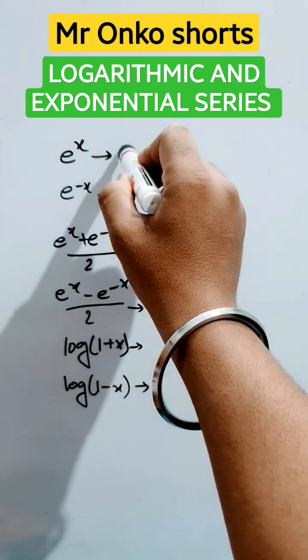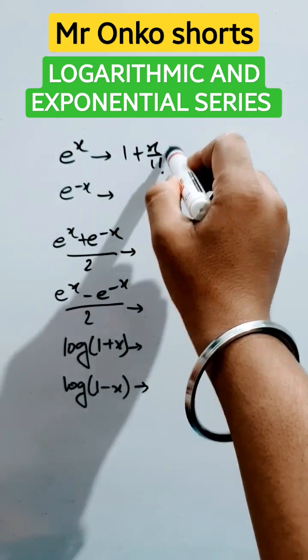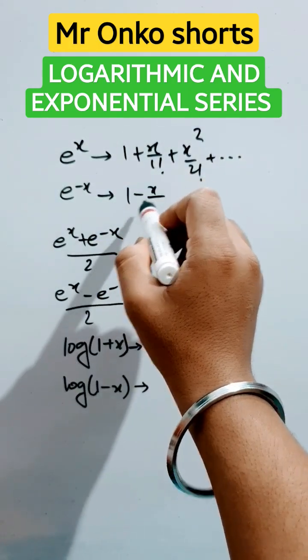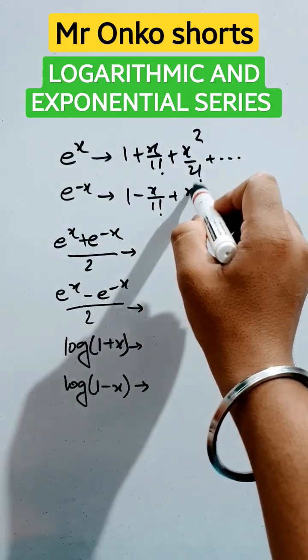e raised to the power x: it will be 1 + x/1! + x²/2! and so on. Now e^(-x): it will be 1 - x/1! + x²/2!